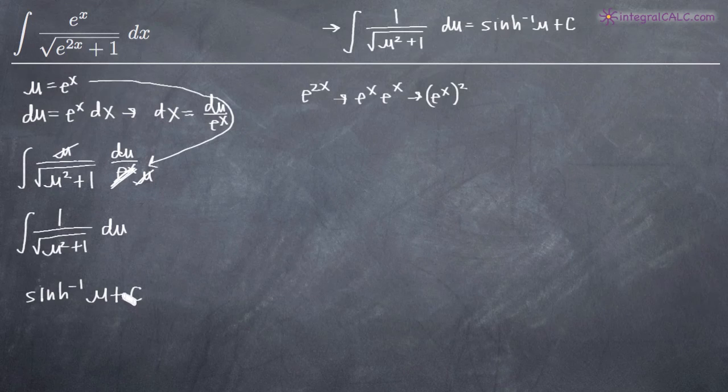Now we need to plug back in for u. We know that it's equal to e to the x. So we'll get the inverse hyperbolic sine function of e to the x plus c. That's it. That's our final answer.